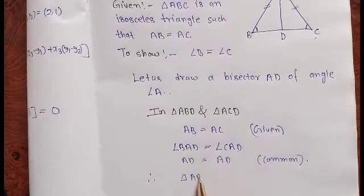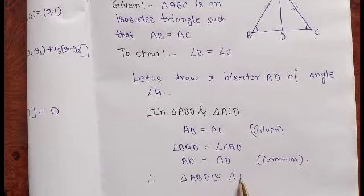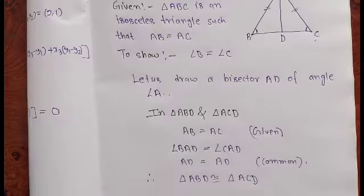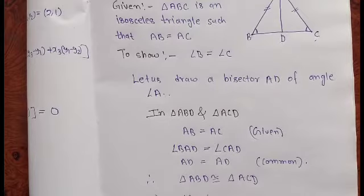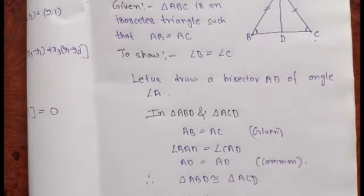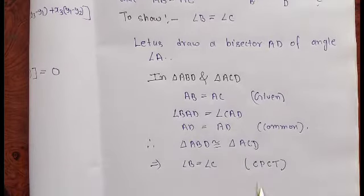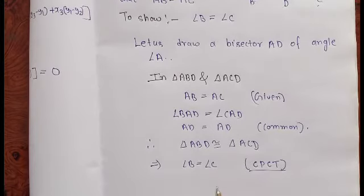Therefore, triangle ABD is congruent to triangle ACD. This gives angle B is equal to angle C by corresponding parts of congruent triangles. Hence proved.